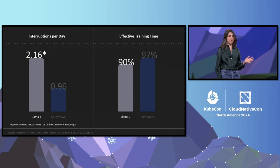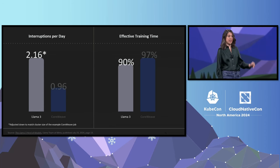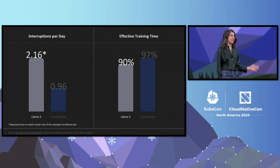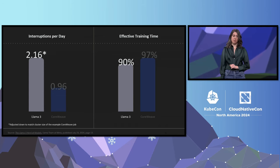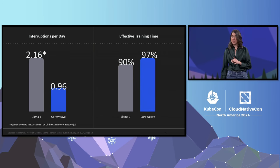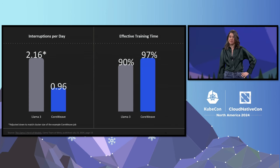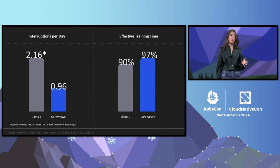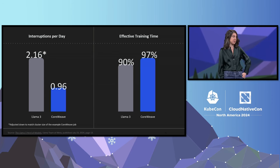So is it even possible to improve effective training time? Looking at the data again, they experienced approximately two interruptions per day, with a 90% effective training time. This is already good, but it's not great. Imagine if you can cut in half the number of interrupts — imagine the performance improvement you gain, as well as the time and cost you could save. These are stats pulled from one of the training jobs running on CoreWeave. We work closely with platform teams to help solve this issue and to build the most stable and capable clusters on the planet.